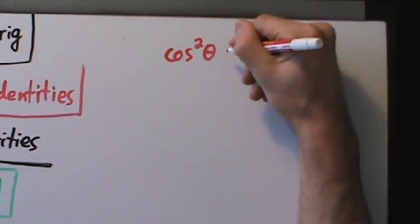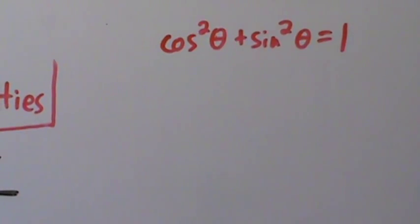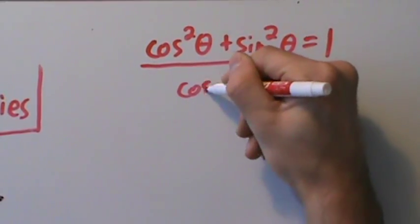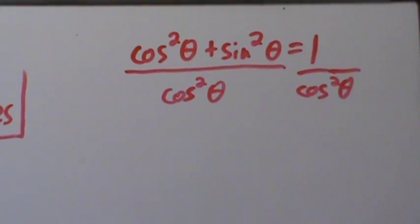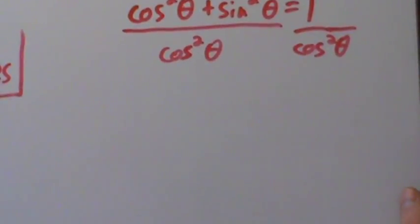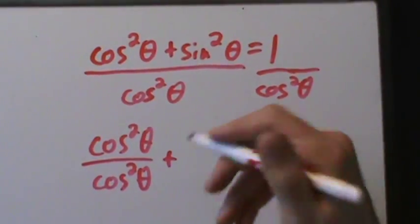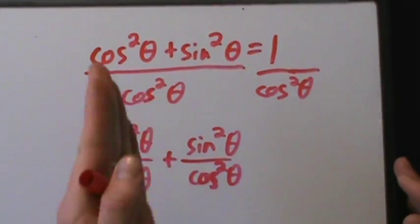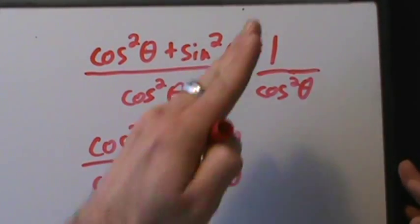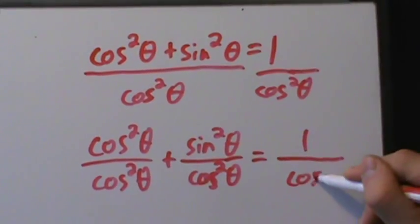Let's start with the first Pythagorean identity: cos²θ + sin²θ = 1. We're going to divide both sides by cos²θ. We split the left-hand side into two fractions: cos²θ/cos²θ + sin²θ/cos²θ, and on the right-hand side we have 1/cos²θ. It's good to see all the details, so we'll go through every step carefully.